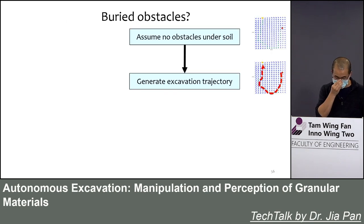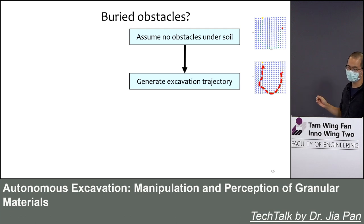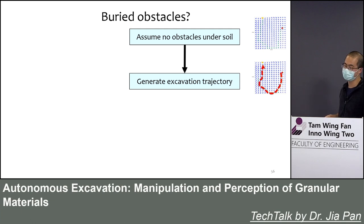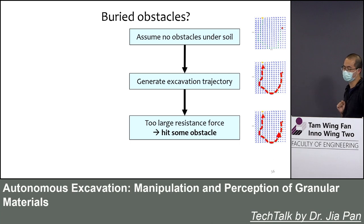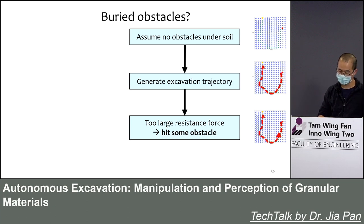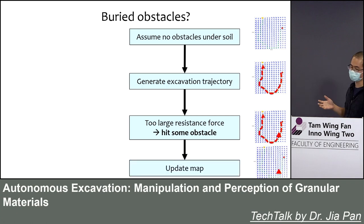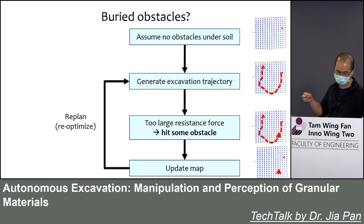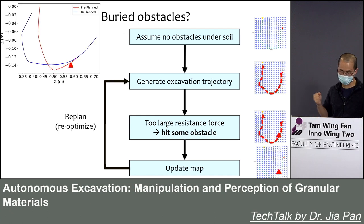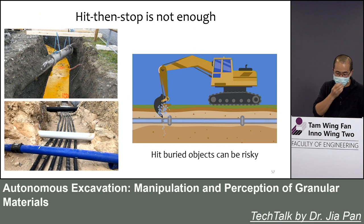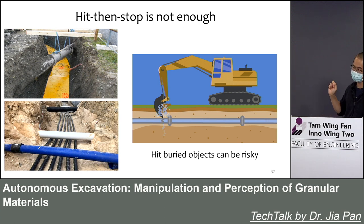There is one problem: if there are obstacles buried in the soil, we also want to avoid them. If the excavator does not initially know an obstacle exists, it computes an excavation plan, executes it, and the bucket hits the obstacle, feeling a very large resistance force. The excavator then updates the obstacle's position in the map, replans, and gets a new result that avoids the obstacle. However, when the bucket actually hits the obstacle, sometimes it is too late — especially when the buried objects are pipes or cables.